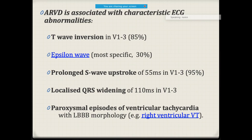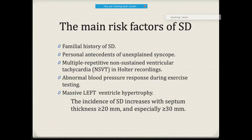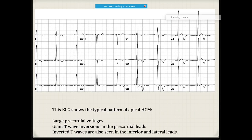You will also notice a prolonged S wave upstroke of nearly 55 milliseconds, especially in leads V1 to V3. There is also localized widening of the QRS, again present only in V1 to V3. On a tachycardia recording, these patients tend to have paroxysmal episodes of VT with left bundle branch block morphology. This is how the histology looks.